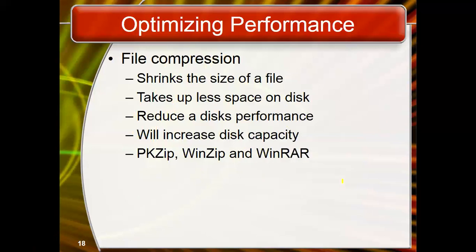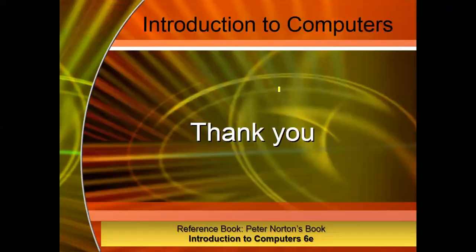For example, if you have 10 items on the disk, they are shown separately, but if you compress them into a single file, it shows as one folder and takes less space. Types of compression software include PKZIP, WinZip, and WinRAR. These cover all aspects of storage, ways of storing, compressing, and optimizing.